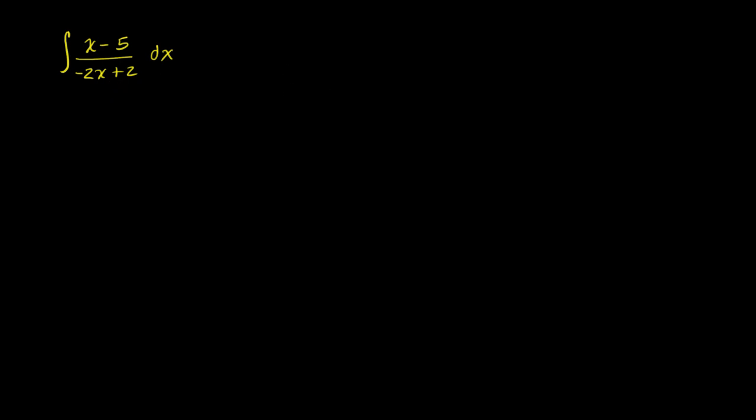We're going to take x minus 5 and divide negative 2x plus 2 into that.